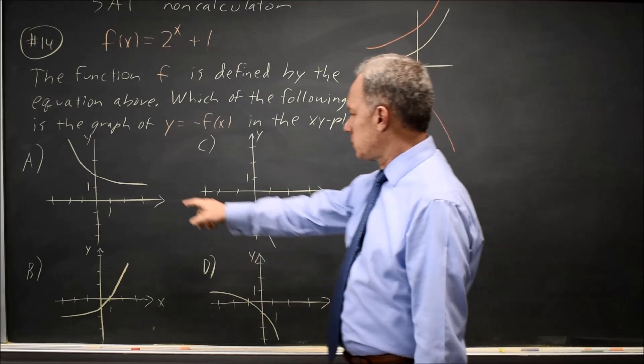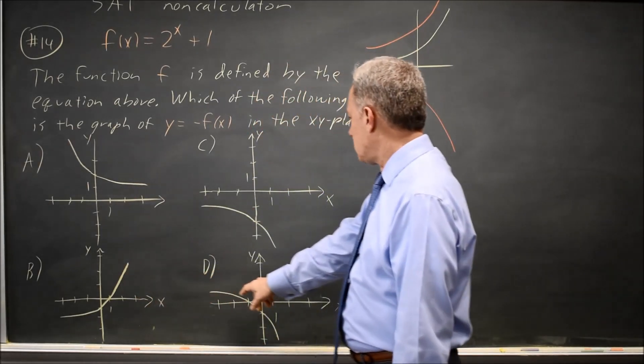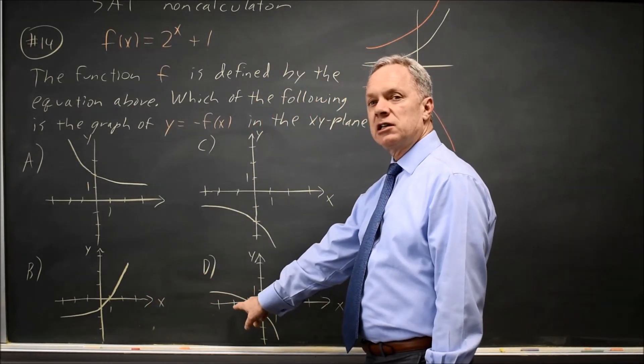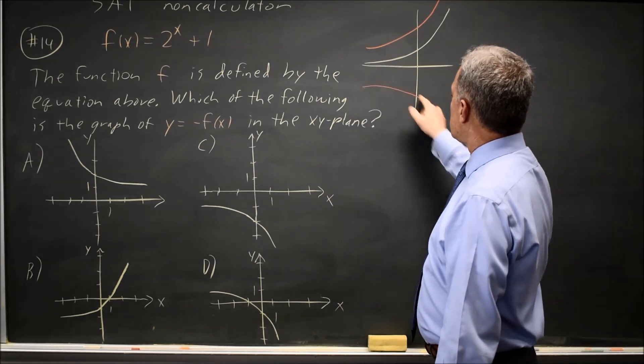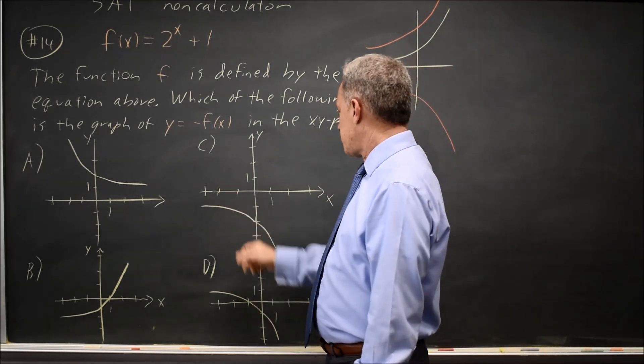which is not choice A and not choice B. It's not choice D because when we reflect it, it will not go through the x-axis, so it has to be choice C.